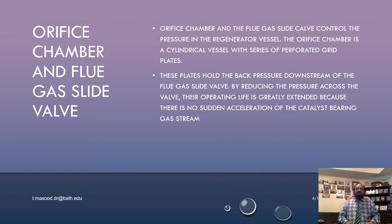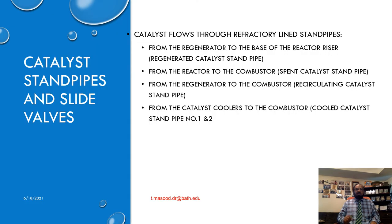The orifice chamber and flue gas slide valve control the pressure in the regenerator vessel. The orifice chamber is a cylindrical vessel with a series of perforated grid plates. These plates hold back pressure downstream of the flue gas slide valve by reducing the pressure drop across the valve; their operating life is greatly extended because there is no sudden acceleration of the catalyst-bearing gas stream in the orifice chamber. With downward flow there are no moving parts, so no adjustments can be made on the stream. The major problem with this equipment is gradual enlargement of the grid holes by erosion.